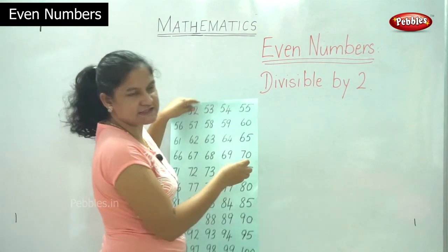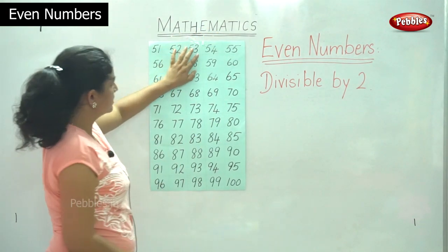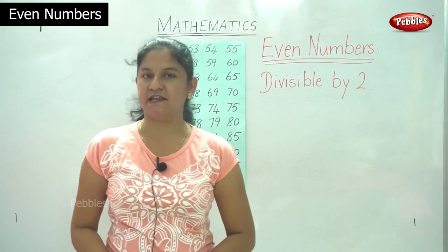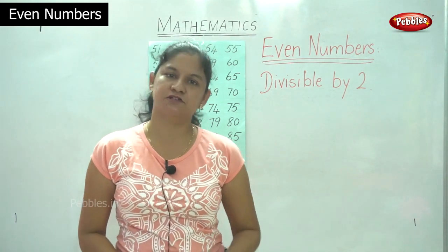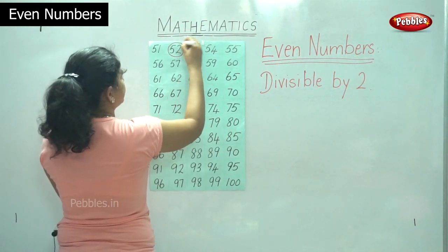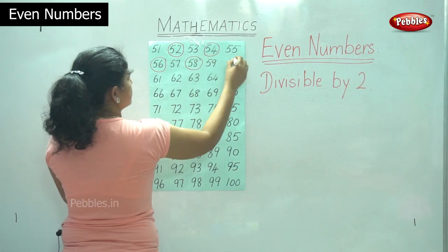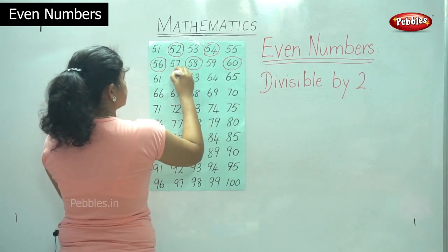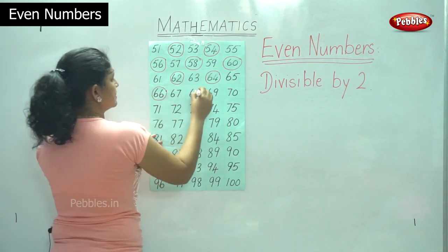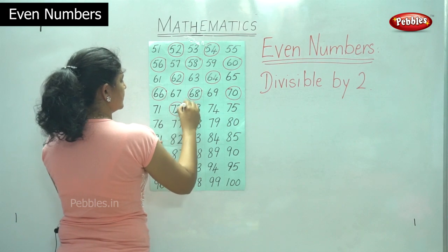I hope you are listening and have understood what I have said. So now we have numbers from 51 to 100 and we are going to see what are all the even numbers. Even numbers are numbers that are divisible by 2. So after 50 we have: 52, 54, 56, 58, 60, 62, 64, 66, 68, 70, 72, 74.